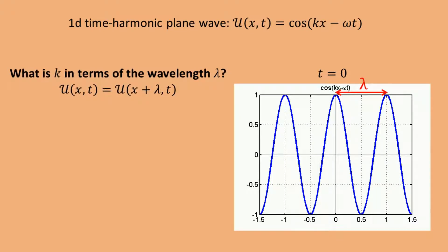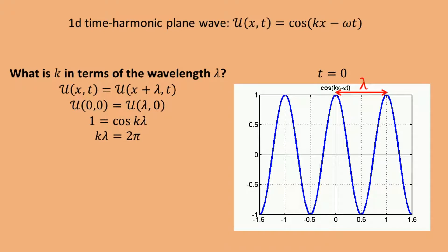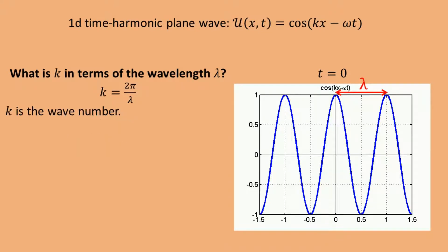So for any point x, the field is the same as at x plus lambda. This has to be true for any point in time t. In particular, it has to be true for x = 0 and t = 0. If we put x = 0 and t = 0 in our expression for u, we get the equation 1 = cosine(k·lambda). The smallest solution larger than zero to this equation is k·lambda = 2π, from which it follows that k = 2π/lambda. k is called the wave number, and one can intuitively interpret it as the number that converts distance to phase. When multiplying k with some distance d, you essentially check how many times the wavelength lambda fits in d, and each wavelength corresponds to a phase shift of 2π, meaning that the wave has gone through one period.